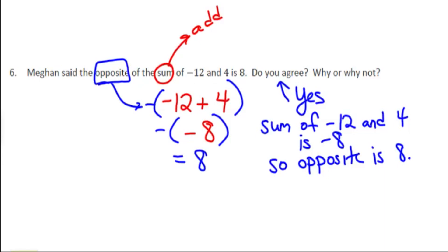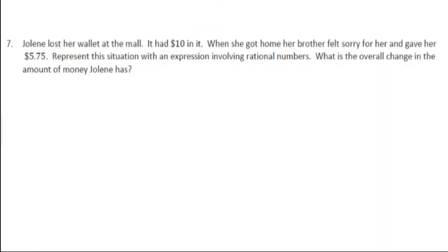Now let's look at problem number 7. This reads, Jolene lost her wallet at the mall. It had $10 in it. When she got home, her brother felt sorry for her and gave her $5.75. Represent the situation with an expression involving rational numbers. What is the overall change in the amount of money Jolene has?